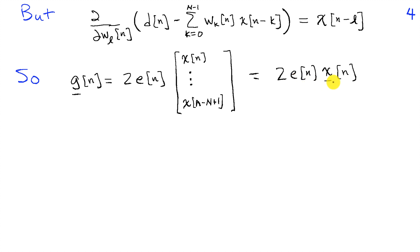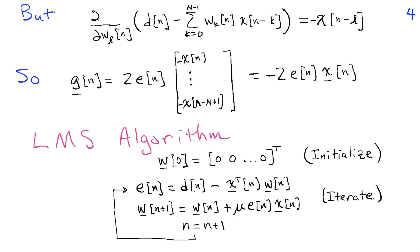When I differentiate with respect to all of these different values of L, we obtain the gradient as 2 times e of n times x of n down to x of lowercase n minus capital N plus 1. In our notation, this is just 2 times e of n times the vector x of n. And remember, the vector x of n, if we move away from the time series construct, is simply a column of the matrix capital X.